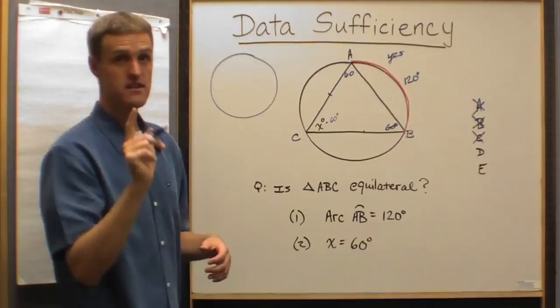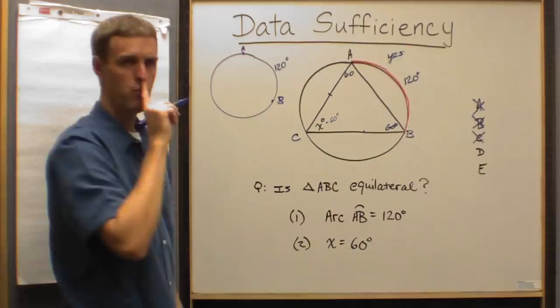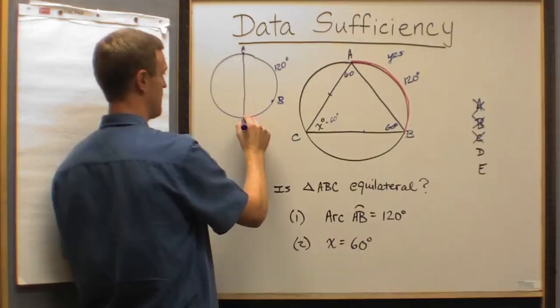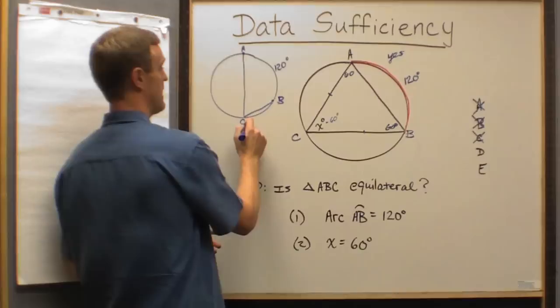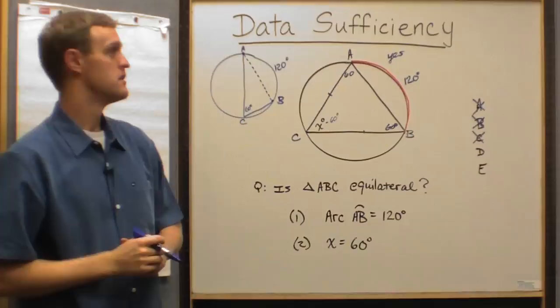But is that how the diagram must look for arc AB to equal 120 degrees? Be creative. What if all that is important, based on statement number one, is that arc AB is 120 degrees? So I won't change that. But here's my question. Is there any reason the diagram couldn't look like that? Is there any reason point C can't be way down there? That's 120 degrees. This is still an inscribed angle. That's 60 degrees. But now when I complete my triangle,